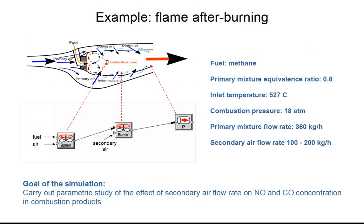The example we would like to present is a simplistic model of the gas turbine combustor. After combustion of fuel and air, the secondary air is added and final chemical reactions proceed in the post-flame zone. The goal of the simulation is to evaluate the effect of secondary air on emissions of CO and NO in combustion products. The fuel under consideration is methane.